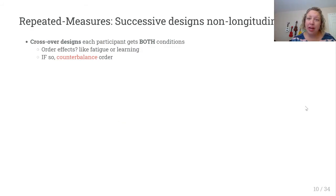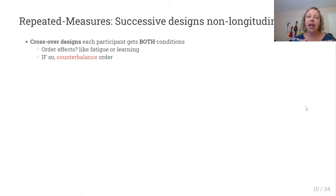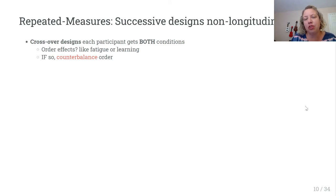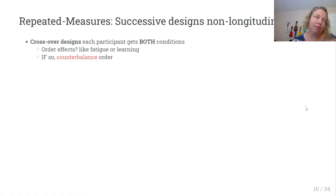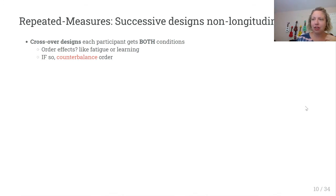We can also have repeated measures designs that are not longitudinal. Longitudinal means we want to look at change over time, but sometimes we want to check two different scenarios without caring about change over time. A classic example: if we want to compare drug A and drug B, we can't give them at the same time, so we have to give them at different times — not because we expect change over time, but simply because we can't administer them simultaneously. This would be a successive design.